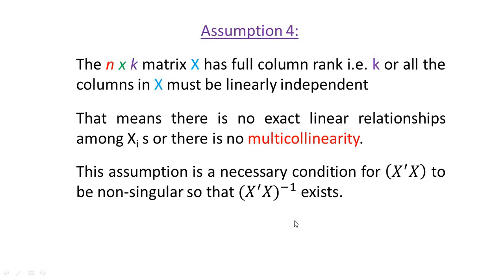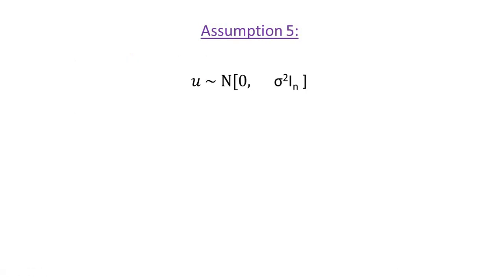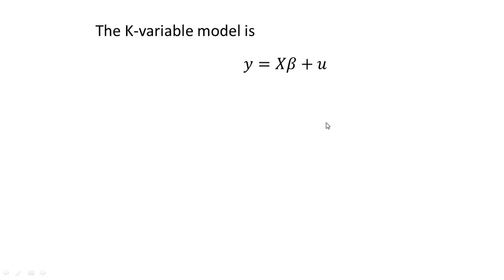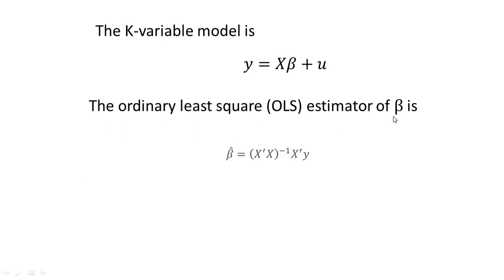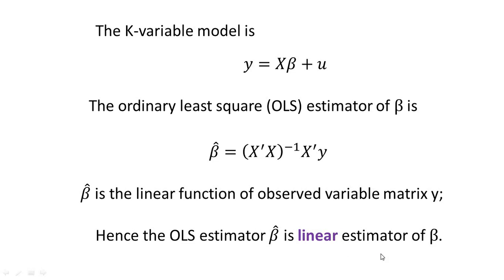Also, k must be less than n — the number of parameters must be less than the number of observations. Assumption 5: The u_i's follow a normal distribution with zero mean and constant variance σ². This assumption is necessary for hypothesis testing. Now, in this k-variable linear model, the OLS estimator of β is β̂ = (X'X)⁻¹X'y. Since y appears in β̂, the OLS estimator is a linear function of the observed variable y, and hence β̂ is a linear estimator of β.